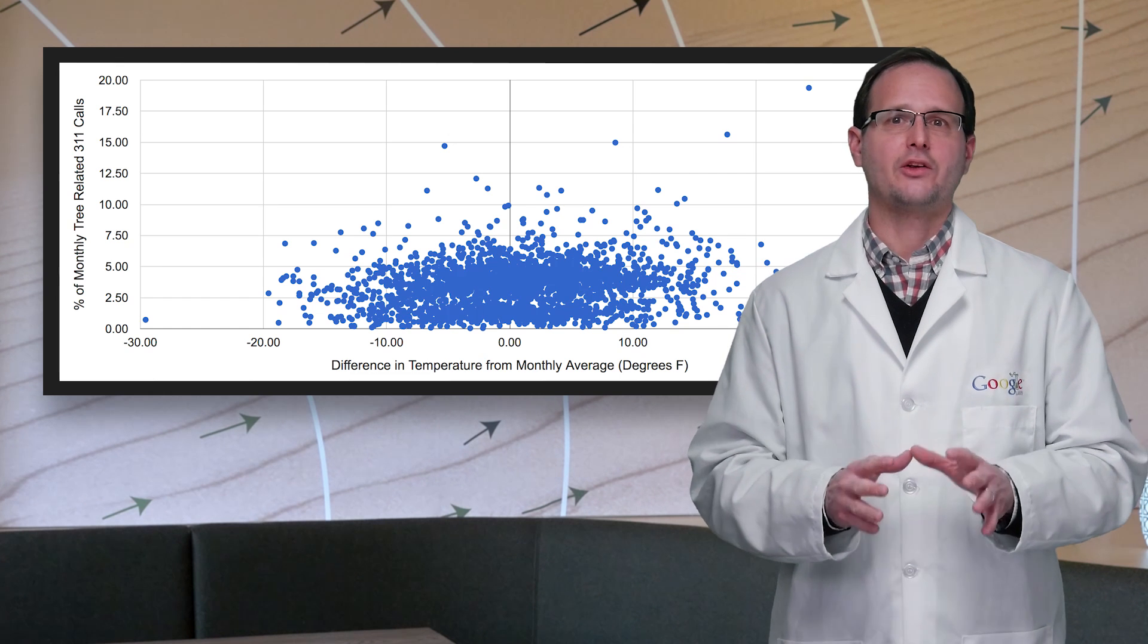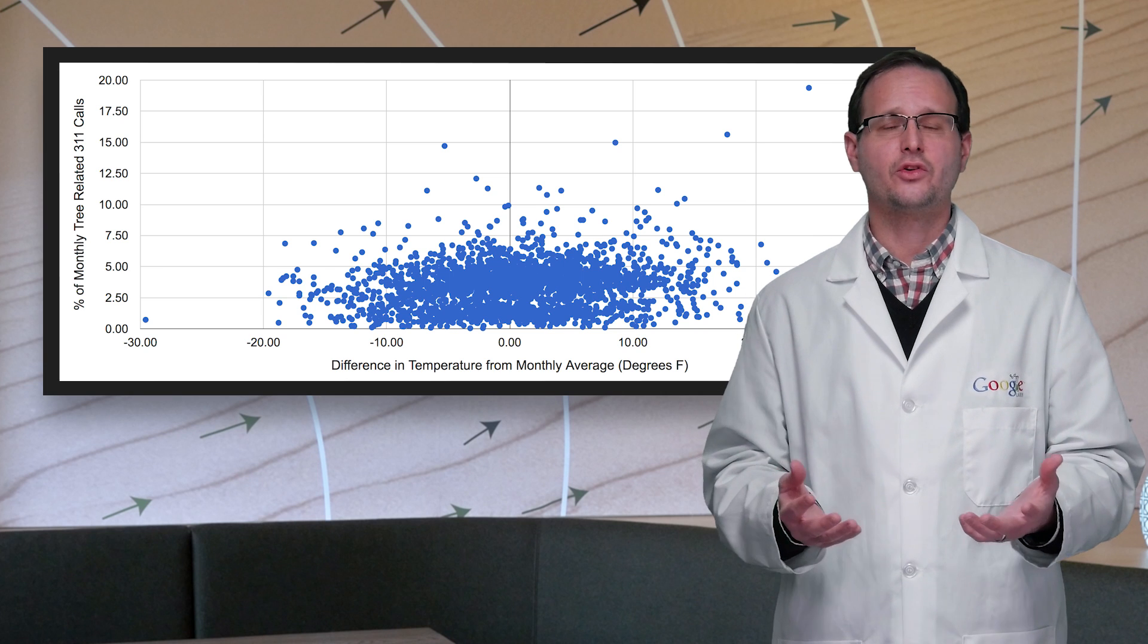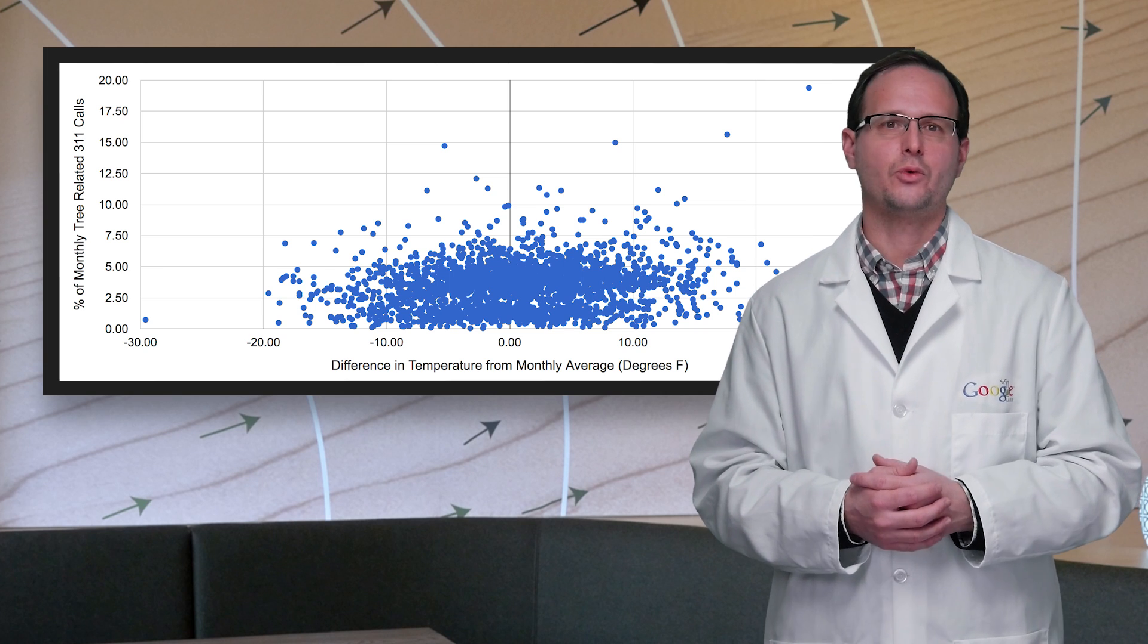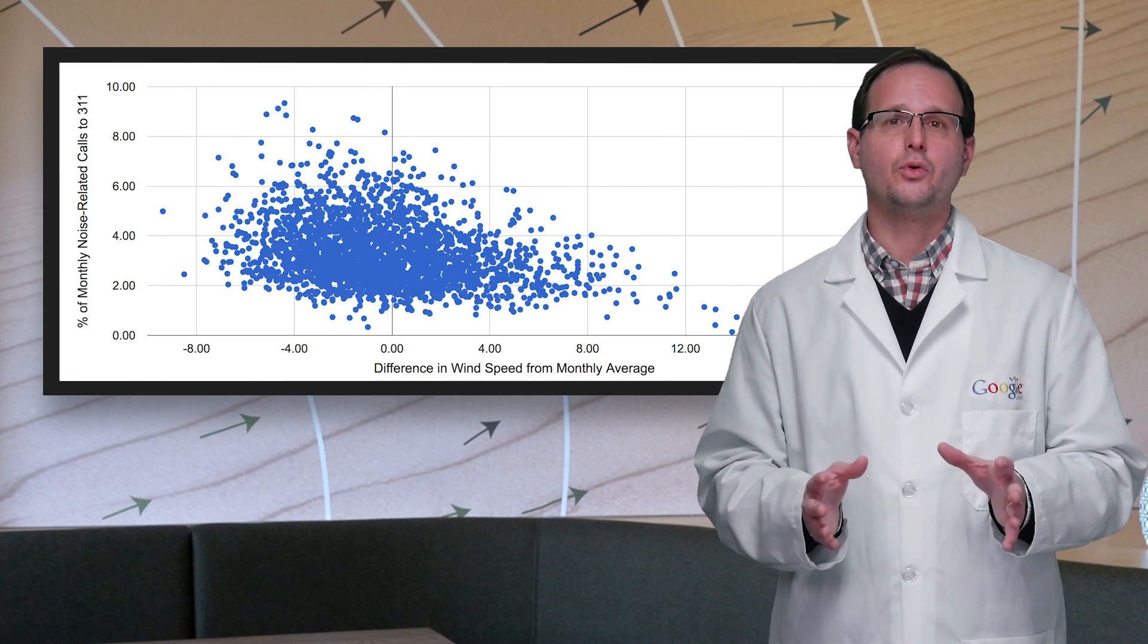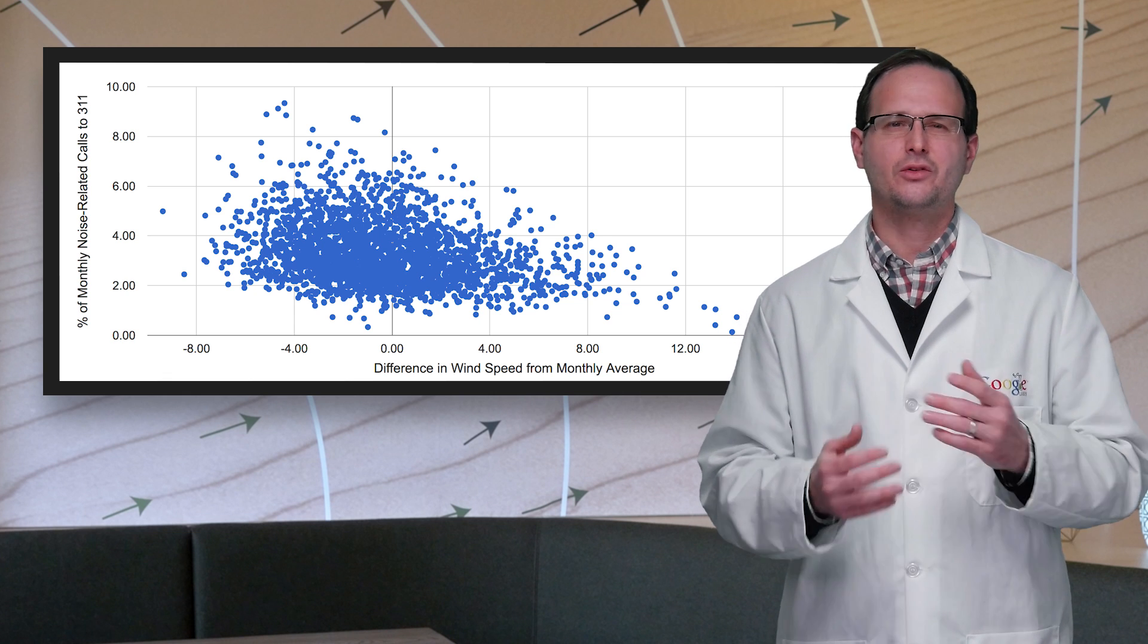Now, wind speed had a strong correlation with noise complaints. We know New York City has windier weather in the winter, so let's just seasonally adjust for that right away. If we graph all our points as a scatter plot, you can almost see a relationship. But there's also a lot of noise.